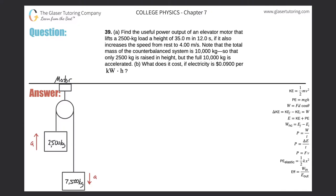Number 39. Find the useful power output of an elevator motor that lifts a 2,500 kilogram load a height of 35 meters in 12 seconds if it also increases the speed from rest to 4 meters per second. Note that the total mass of the counterbalance system is 10,000 kilograms, so that only 2,500 kilograms is raised in height, but the full 10,000 kilograms is accelerated.